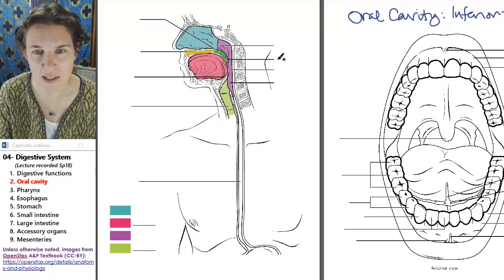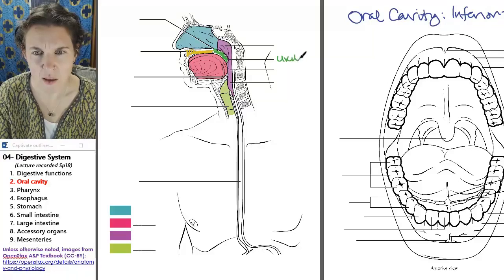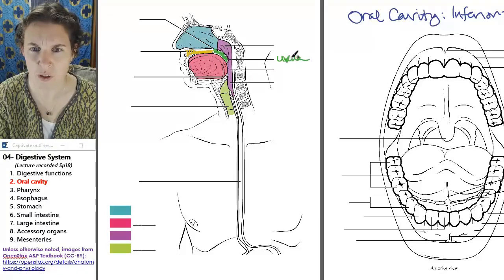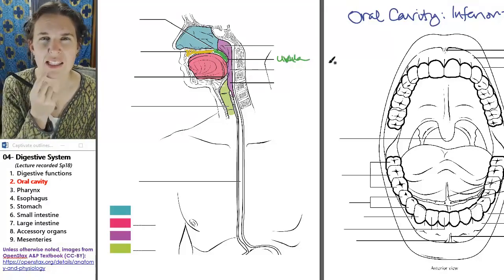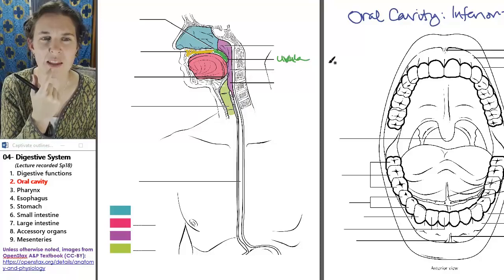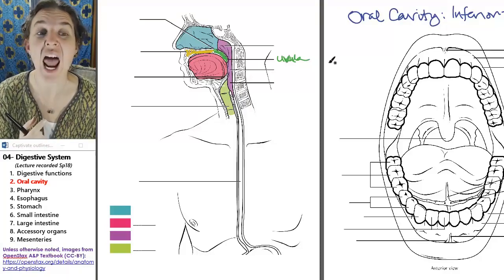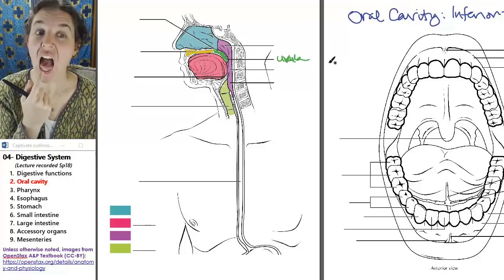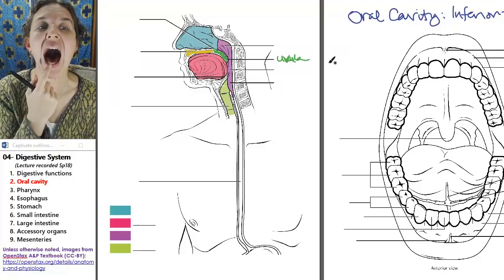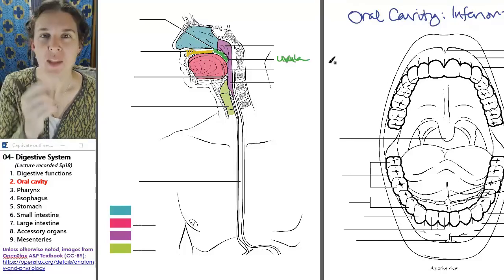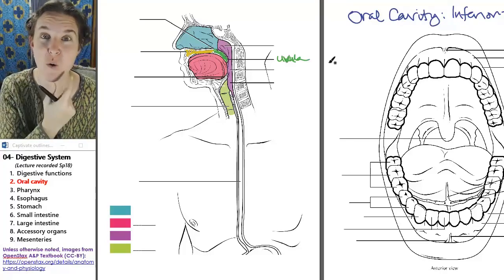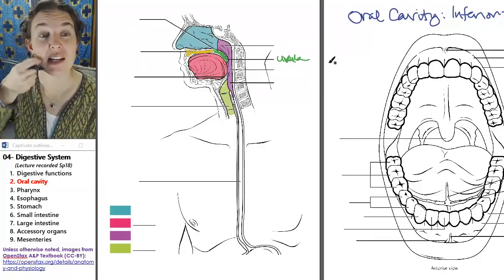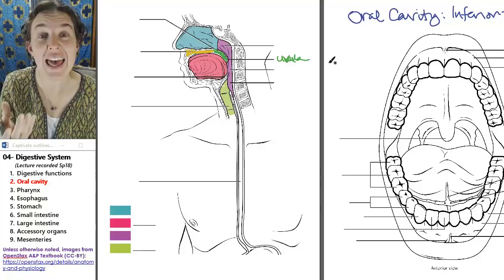Now, the soft palate, the uvula is that little wormy thing in the back of your throat. I don't know if you can see mine. And, ha, you totally can see it. I had a student once who had a forked uvula. It was super cool to look at. So the uvula is just the extension or the end of the soft palate.